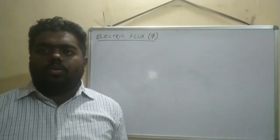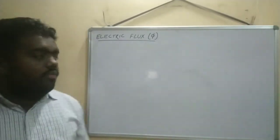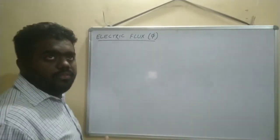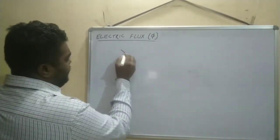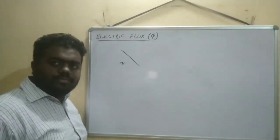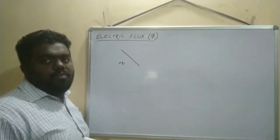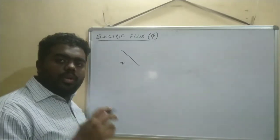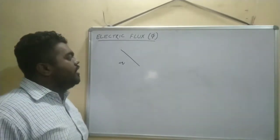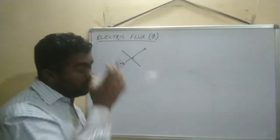Today's first topic is electric flux. Suppose there is a closed surface, or any type of surface like this. I have kept a charge plus Q here. The number of electric field lines passing perpendicular to any surface is known as electric flux — the condition is that they should pass perpendicular.